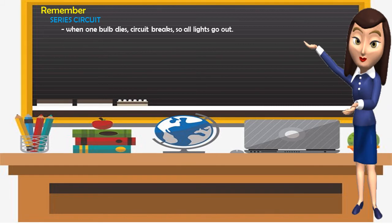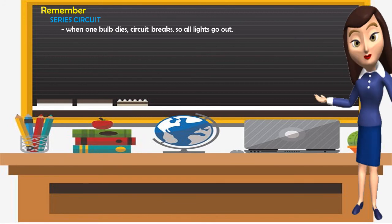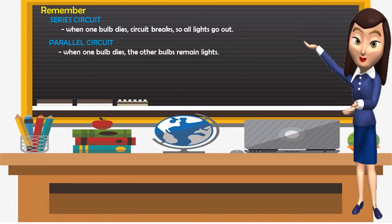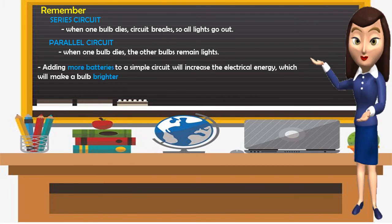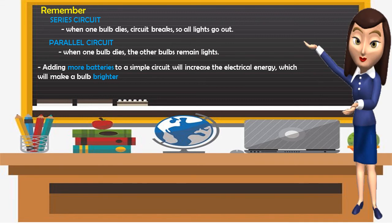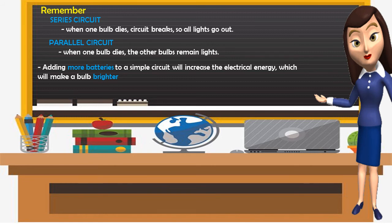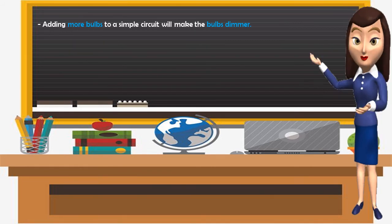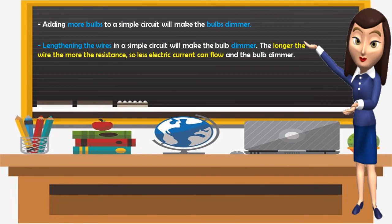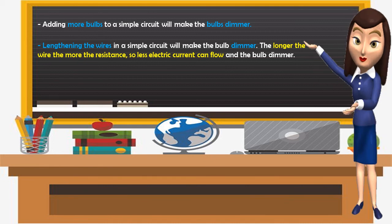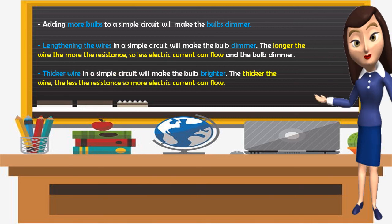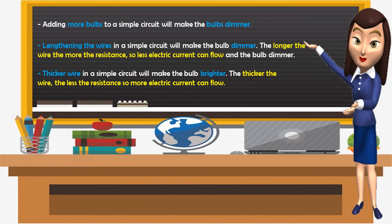Remember, in a series circuit, when one bulb dies the circuit breaks so all lights go out. While in a parallel circuit, when one bulb dies, the other bulbs remain lit. Adding more batteries to a simple circuit will increase the electrical energy, making the bulb brighter. Adding more bulbs to a simple circuit will make the bulbs dimmer. Lengthening the wires makes the bulb dimmer — the longer the wire, the more the resistance, so less current flows. Thicker wire makes the bulb brighter — the thicker the wire, the less the resistance, so more current can flow.